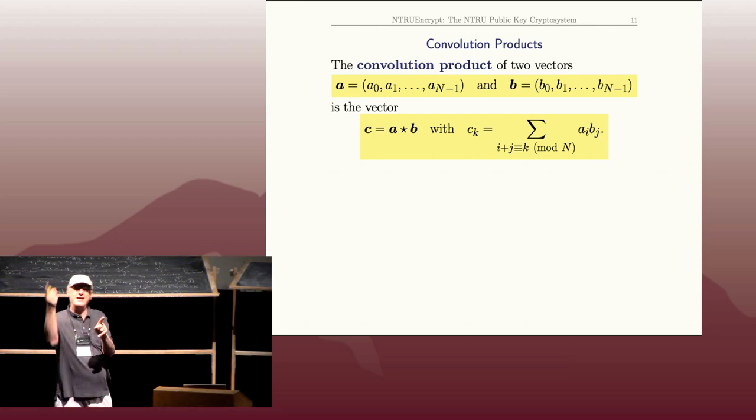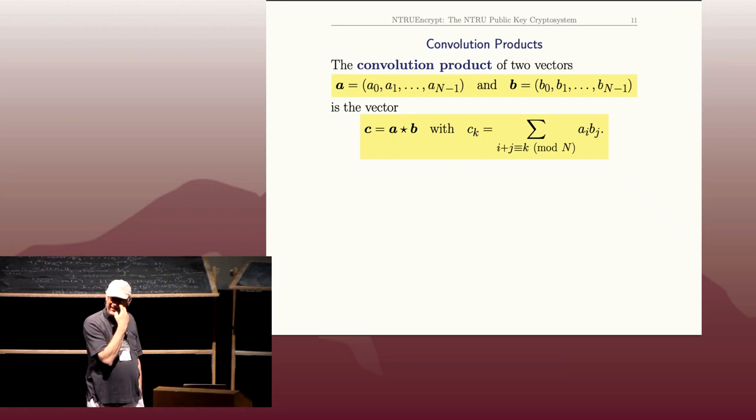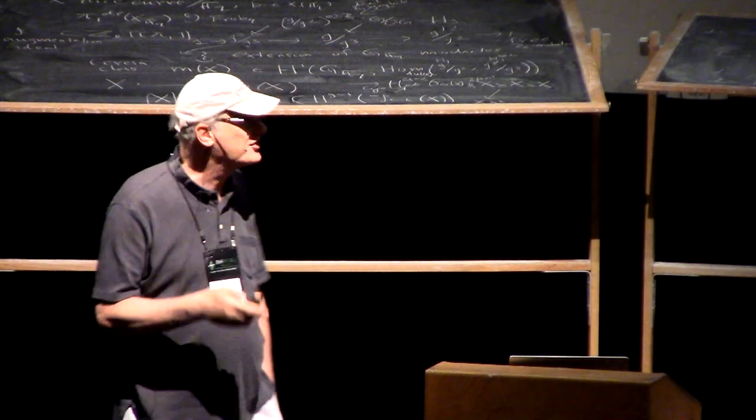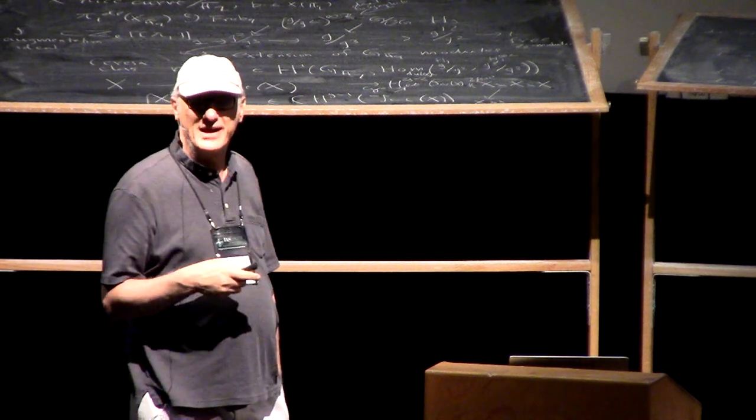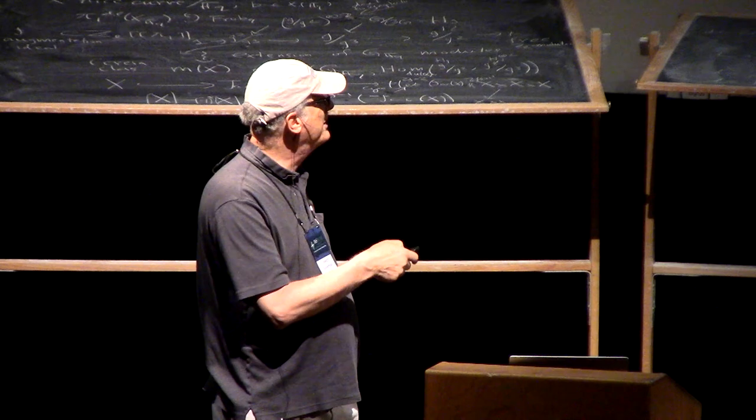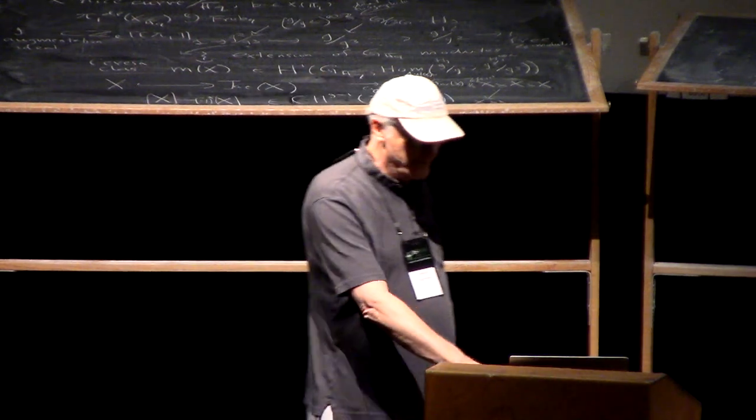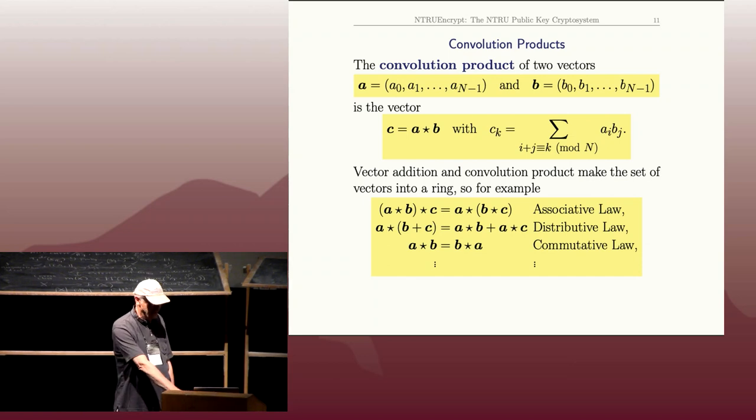It's just a dot product with shifted and flipped, then rotated coordinates. It looks messy, and if you're teaching abstract algebra, this is a good exercise. This product, which looks kind of messy, makes the n-dimensional vector space into a commutative ring. The commutativity isn't 100% obvious, associativity is definitely not obvious, but it all works out. Vector addition and convolution product make the set of vectors into a ring.